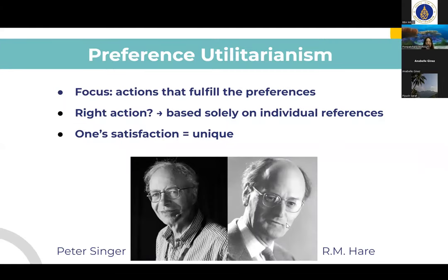The second version is preference utilitarianism, which has R.M. Hare and Peter Singer as their prominent representatives. It talks about the ultimate focus on actions that would best satisfy people's interests and preferences. This reflects the point that every person's perspective of satisfaction is unique. Since what is right solely depends on the preferences of each person, there are no criteria indicating which preference is good or which is bad. Also, it is stated that the desired preferences can also be irrational sometimes. Another issue that could happen is the contradiction in the preferences, whether it's between individuals or between the preferences of one individual.